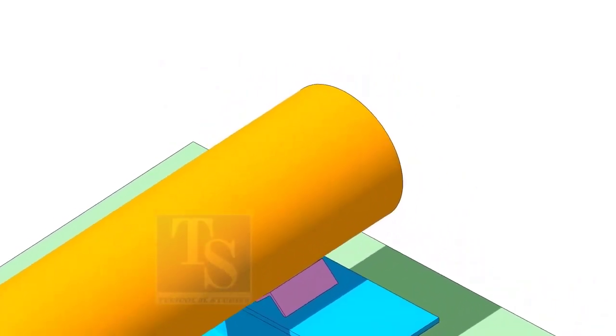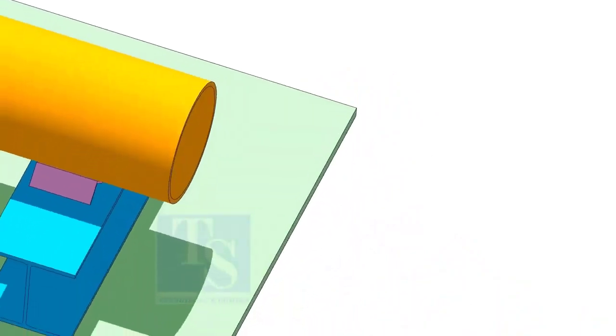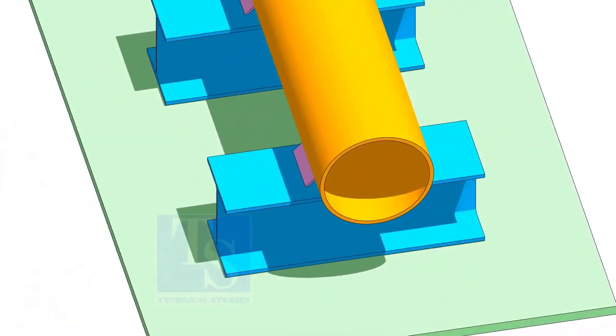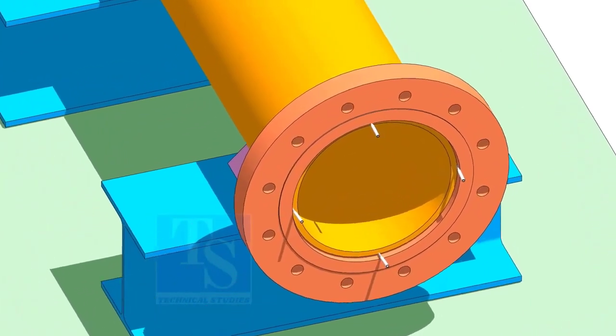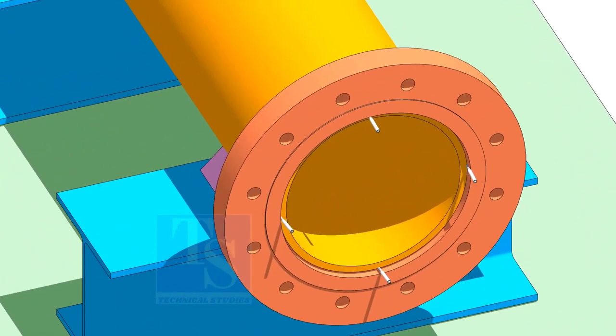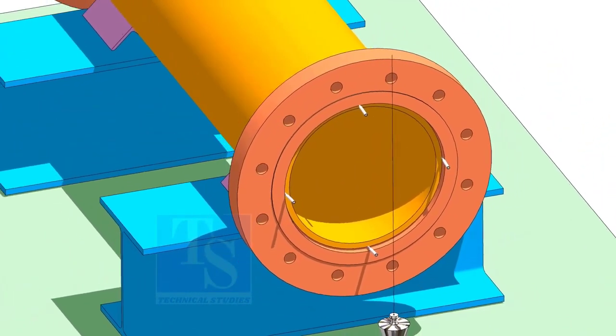Go to the other end of the pipe, put the flange, correct the gap between the pipe and the flange and correct the gap for the welding. Correct the plumbness.